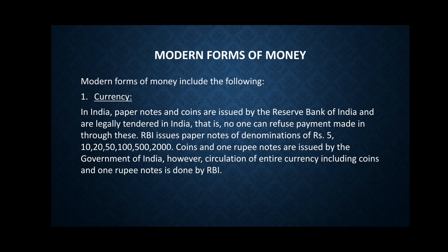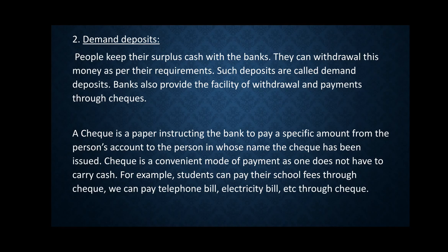All paper notes except the 1 rupee note are issued by the Reserve Bank of India. The Government of India issues all the coins and the one rupee note only. But RBI is responsible for the entire circulation of money in the economy. The next form of money is demand deposits — people keep their surplus cash with the bank and can withdraw this money as per their requirement. Such deposits are called demand deposits.